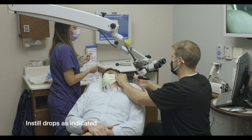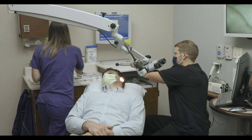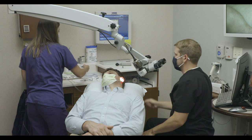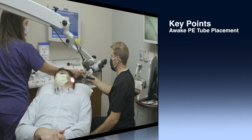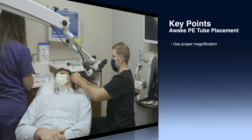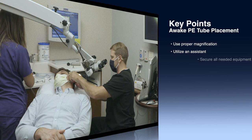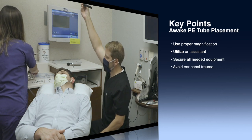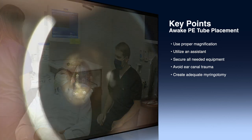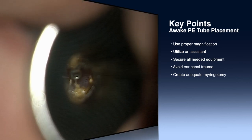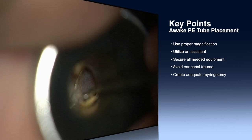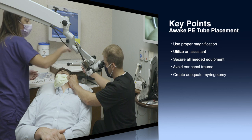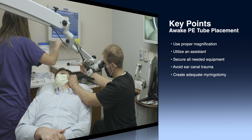Following tube placement, it's typically advised to observe water precautions for just a couple of days. To summarize the key points: PE tube placement should ideally be performed using an otologic microscope; as a compromise, loupes or an endoscope can be used depending on the context. It's ideal to have an assistant with you since you'll be looking under the microscope.